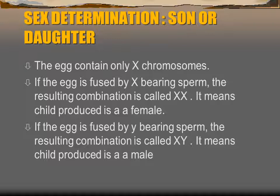Next is sex determination — how a son or daughter is determined. Our body has 46 chromosomes in 23 pairs; 22 pairs are identical and the 23rd is the sex chromosome. If the X chromosome in the female egg is combined with a male X chromosome, the child is female. But if the egg is fused by a Y-bearing sperm, the resulting combination is XY and the child is male. All female eggs carry only X chromosomes.